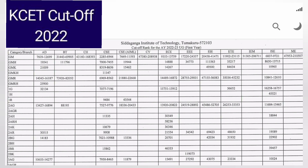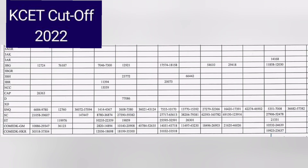The table continues for more categories. You can see additional categories like 3BG, 3BH, NCC, and others. There is also a row called SNQ, which is the Supernumerary Quota for students whose family income is below a certain level. You can check for those seats as well.